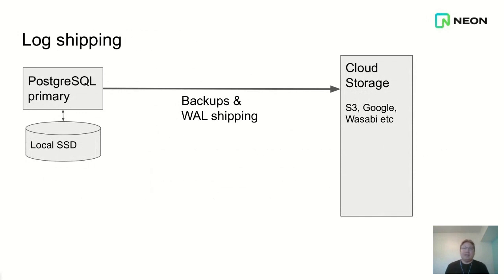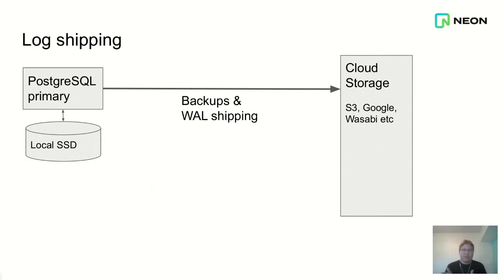The next thing you realize is that it's not good enough to have a backup every night. So you set up log shipping in Postgres, which means that every time a transaction log segment gets filled up, it gets uploaded to cloud storage. With that, you can restore to any point in time — you can take the last backup and recover by replaying the logs. Of course, that takes a while. Restoring from backup is not a cheap operation, especially if you have a large database.